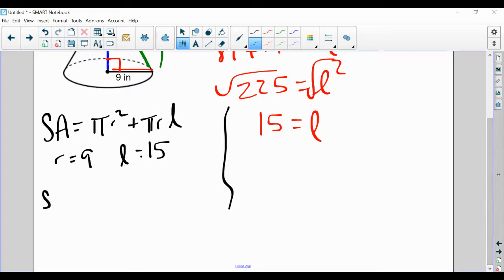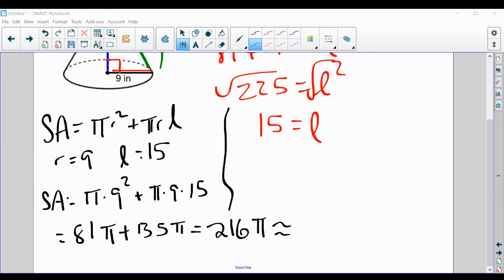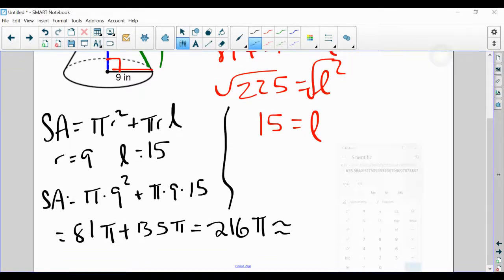So my surface area is pi times 9 squared plus pi times 9 times 15, which gives me 81 pi plus 135 pi for a total of 216 pi. And if I want to round that, I'll do 216 times the pi button, and I got 678.6, 678.6 inches squared.